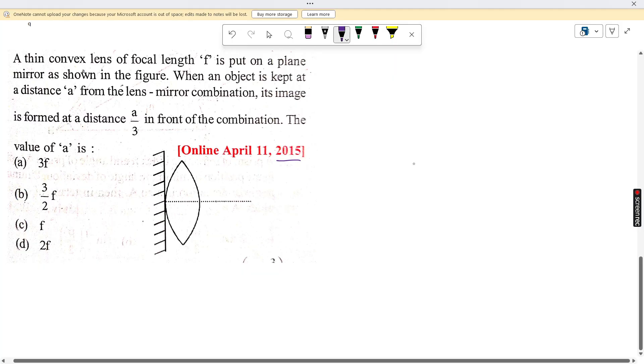Now the question is: a thin convex lens of focal length f is put on a plane mirror as shown in the figure. When an object is kept at distance a from the lens-mirror combination, its image is formed at a/3 in front of the combination.